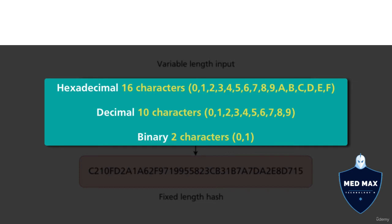In decimal format, there are 10 characters. In binary format, there are just 2 characters, 0 and 1.